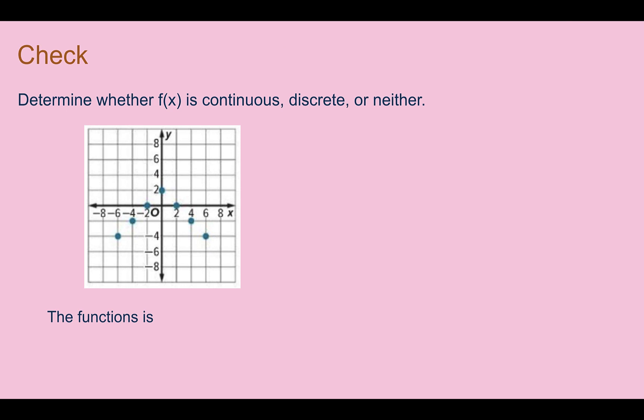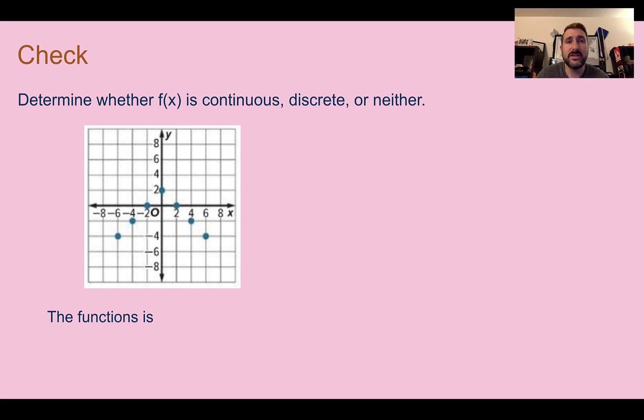Check your understanding: determine whether f(x) is continuous, discrete, or neither. Pause the video now and complete the check. You should have said this function is discrete because it is shown as a bunch of points that are not connected.